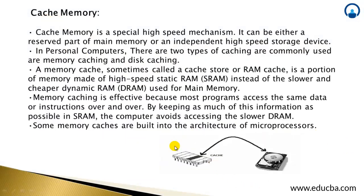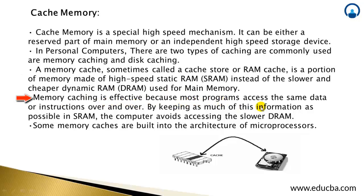Cache memory is a special high-speed mechanism used to store data and facilitate lots of communication with the hard disk. It can be either a reserved part of main memory or an independent high-speed storage device. In personal computers, two types of caching are commonly used: memory caching and disk caching. A memory cache, sometimes called a cache store or RAM cache, is a portion of memory made of high-speed static RAM (SRAM) instead of slower, cheaper dynamic RAM (DRAM) used for main memory. Memory caching is effective because most programs access the same data or instructions repeatedly, allowing the computer to avoid accessing the slower DRAM. Some memory caches are built into the architecture of the microprocessor.